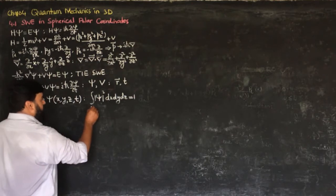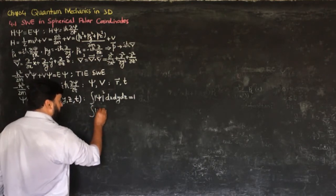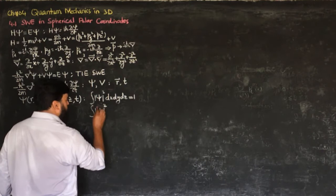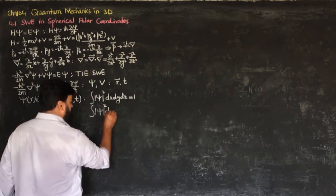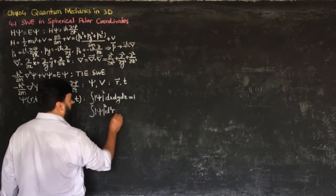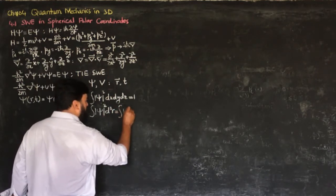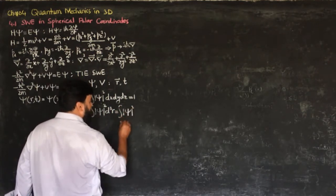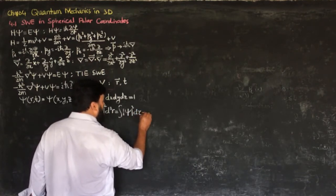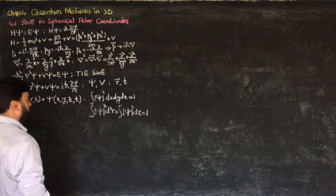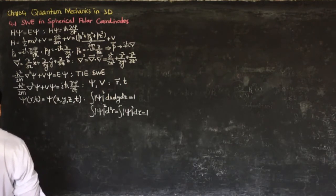We can also write this as the integral of |psi|² d³R, or equivalently |psi|² d-tau equals 1, where d-tau is the volume element.